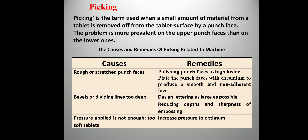Deep embossing wells or dividing lines can also cause peaking — designing lettering as large as possible and reducing the depth and sharpness of embossing can reduce it. If pressure applied is insufficient, soft tablets are produced which are easy for punches to pick — increasing pressure to optimum to achieve good tablet hardness can reduce peaking.